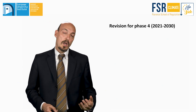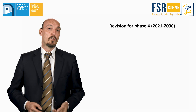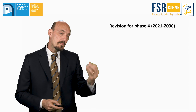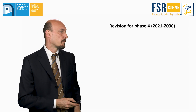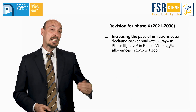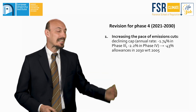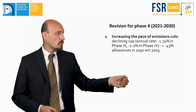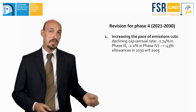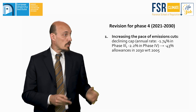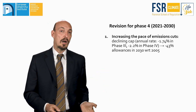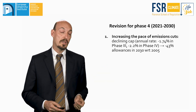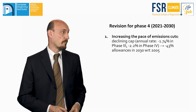Finally, a revision for Phase 4 has already been designed, based on three main pillars. The first is increasing the pace of emission cuts by accelerating the reduction of the cap from minus 1.74% in Phase 3 to minus 2.2% in Phase 4, so that the amount of allowances in 2030 will be 43% lower than their initial amount in 2005.